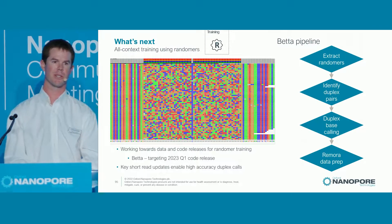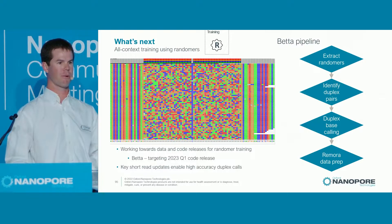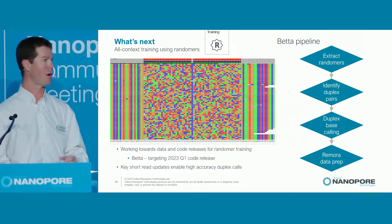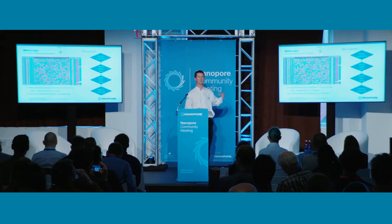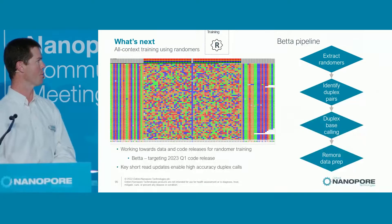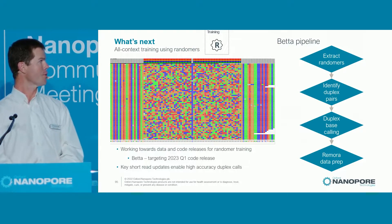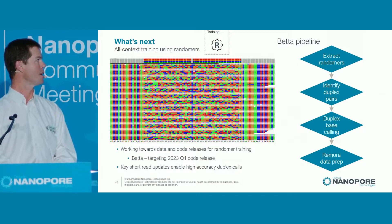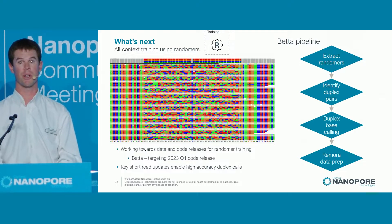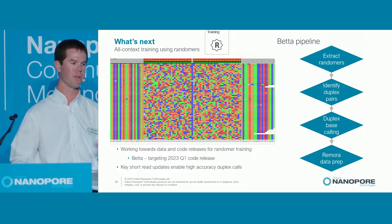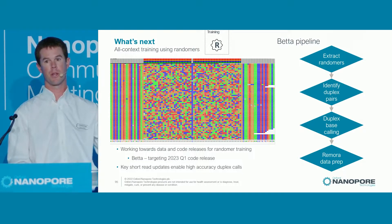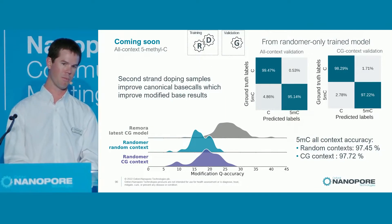What's next: all-context modified bases. This is where we've put a ton of effort internally — we've generated over 60 of these types of samples to train all of our all-context models. The idea is that you sequence these and really need duplex accuracy to get enough reads to generate enough training chunks to train a good Remora model. You extract the randomers from simplex calls, identify duplex pairs, duplex base call these, and do Remora data prep. We're targeting a Q1 release for this training and data processing pipeline so the community can start doing this without waiting for Nanopore.